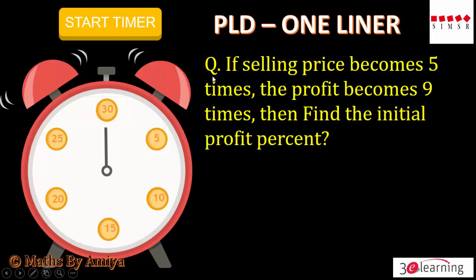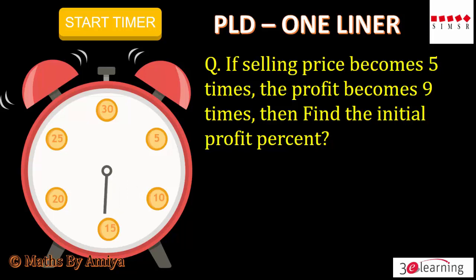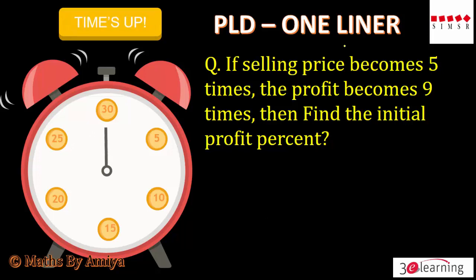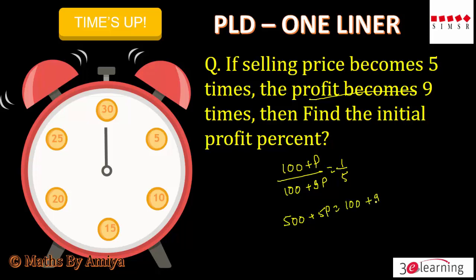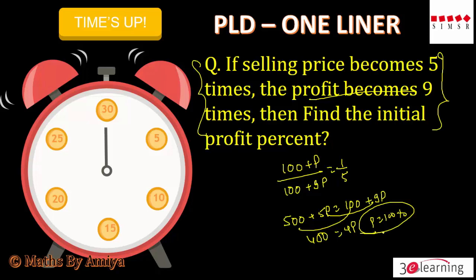Selling price becomes 5 times, profit becomes 9 times. Time up. Profit becomes 9 times means profit was P and now becomes 9P. The ratio for selling price is 5, so: 500 plus 5P equals 100 plus 9P. This gives 400 equals 4P, so P equals 100 percent.